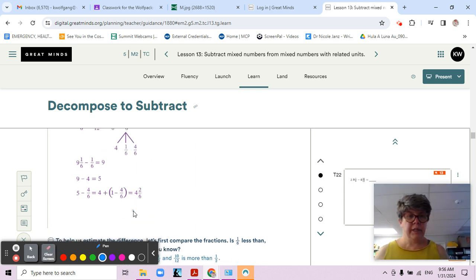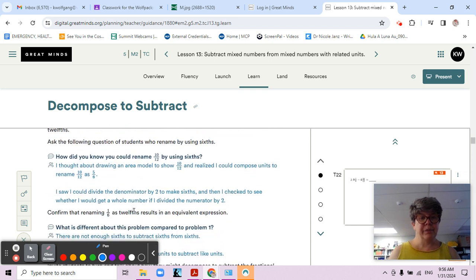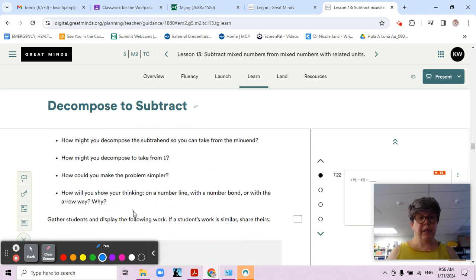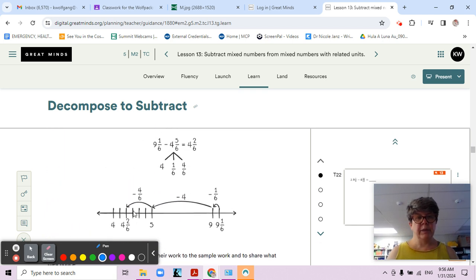We're going to look at another way to do that same problem. Once again we broke our four and one sixth and four sixths from our four and five sixths, and then we use the number line. Starting with nine and one sixth, take away one sixth, then we're at nine. Take away the four, now we're at five. Take away four sixths, that lands us at four and two sixths.